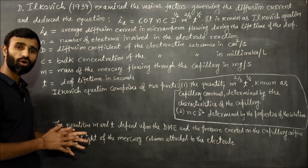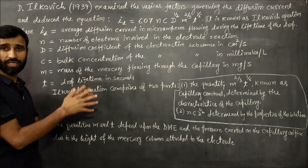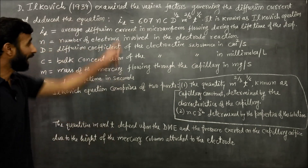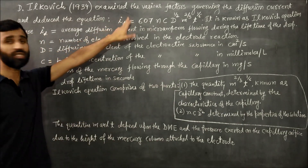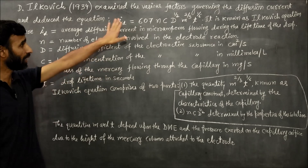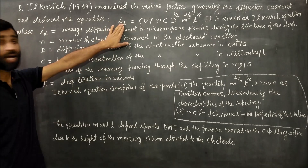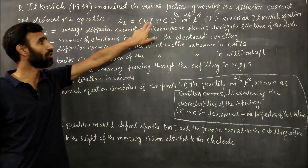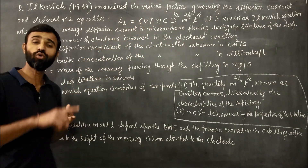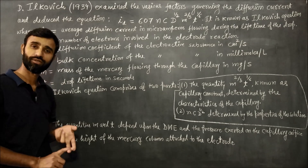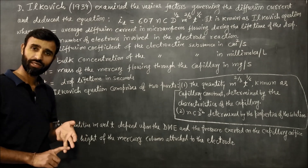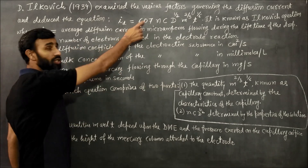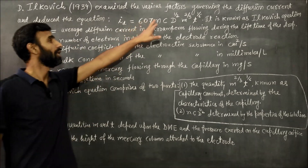The important factor is the meaning of these terms. id is the average diffusion current, and that average diffusion current is in microamperes. The constant value 607 includes Faraday's constant, pi, and the density of mercury. For the maximum current this value is 708.